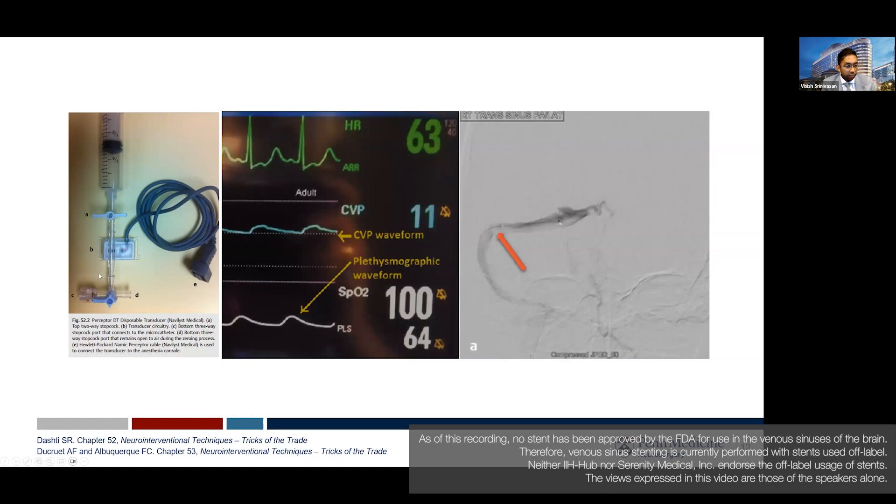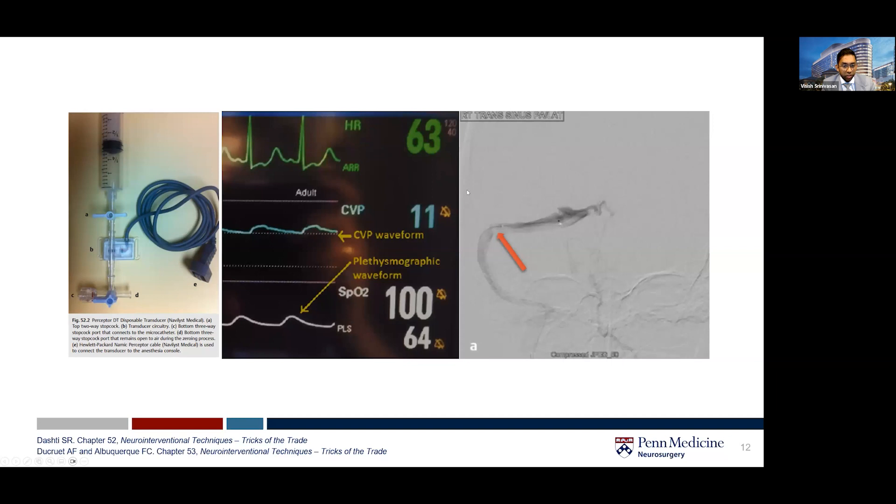Usually we are doing that with a pressure sensing system. It's the same thing that we would use for measurement of CBPs. And this gets hooked up to our anesthesia monitoring system and mirrored on our angiographic screen while we're doing our venous study.